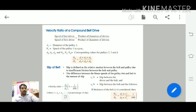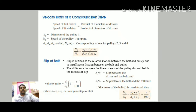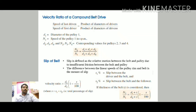For the compound belt drive, more number of pulleys means different values of D1, D2, D3, and D4, with corresponding speeds N1, N2, N3, and N4 in RPM. The velocity ratio of the compound belt drive is the speed of the last driven divided by the speed of the first driver, which equals the product of the diameters of all drivers divided by the product of the diameters of all driven pulleys.